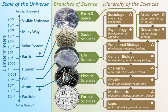The formal sciences are the branches of science that are concerned with formal systems, such as logic, mathematics, theoretical computer science, information theory, systems theory, decision theory, statistics, and theoretical linguistics.